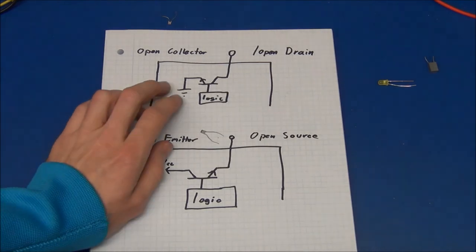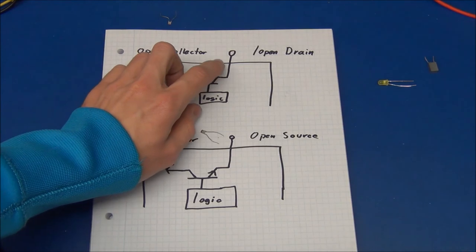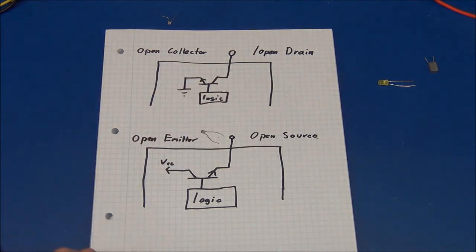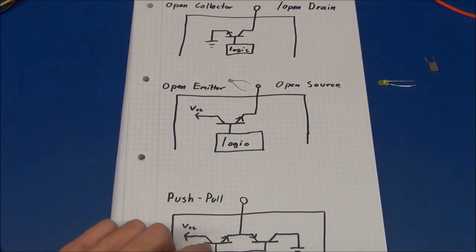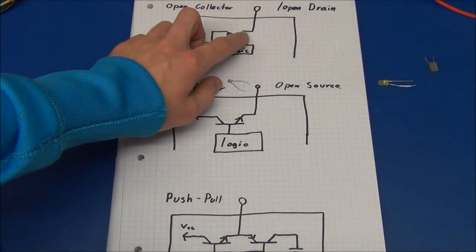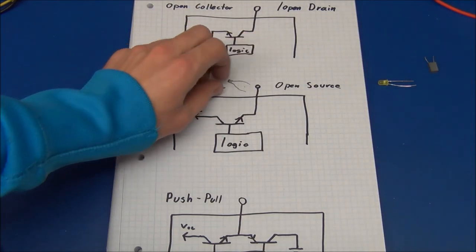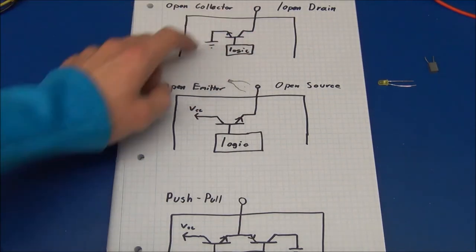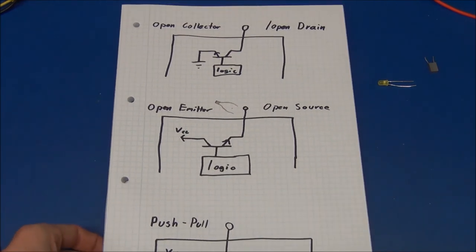So unfortunately, I don't have any chips with open collector output, so I cannot show how to make one of these into a push-pull configuration. But it's just to add a pull-up resistor and a transistor pair to the output, so that should be fairly simple.